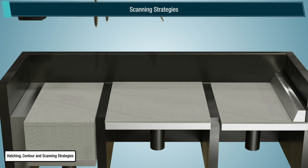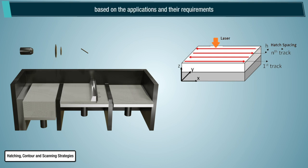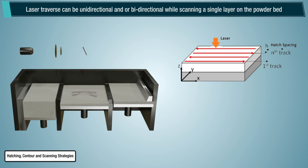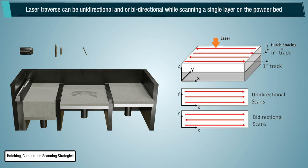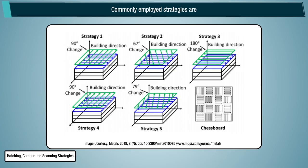Scanning strategies. There are different laser scanning strategies used in the laser powder bed fusion, based on the applications and their requirements. Laser traverse can be unidirectional and or bidirectional, while scanning a single layer on the powder bed.